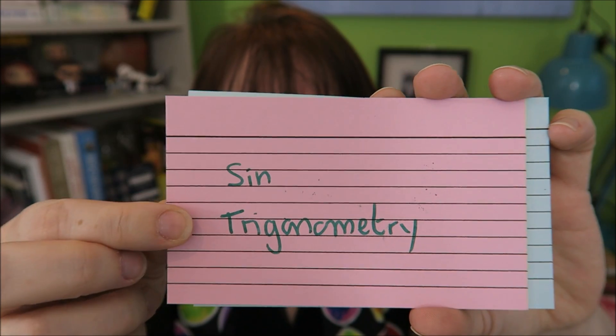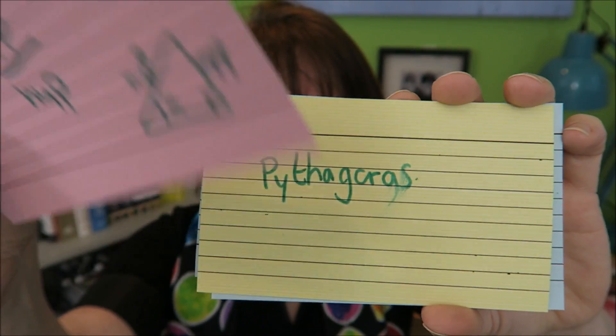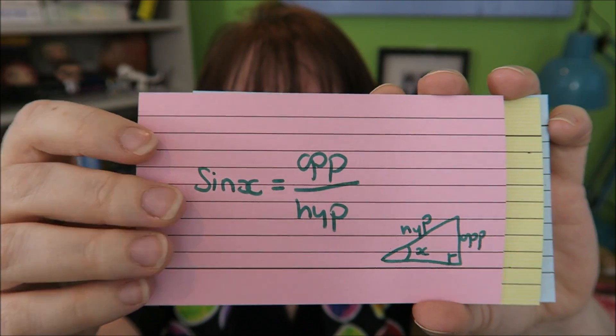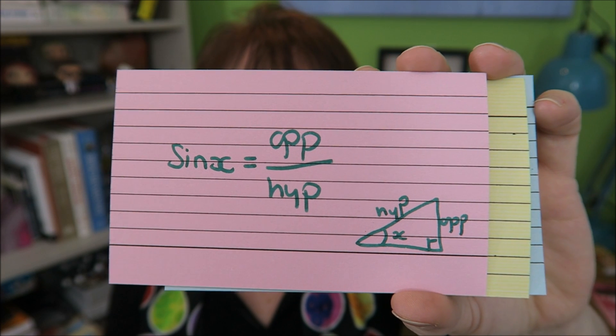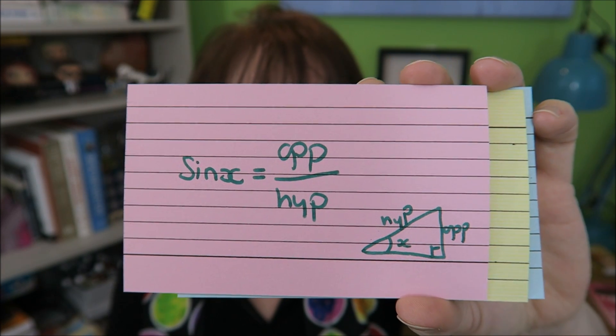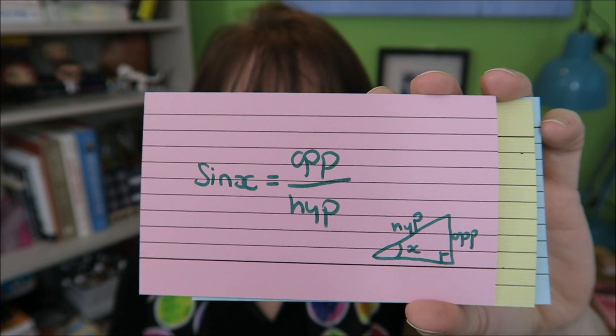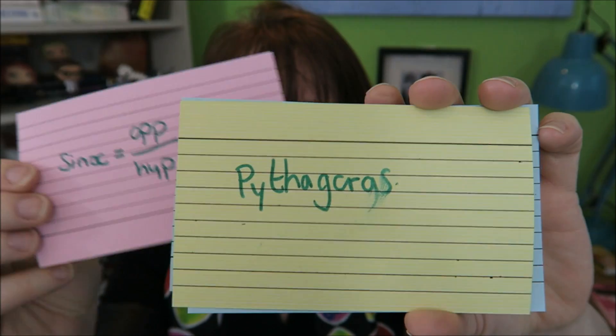The sine rule in trigonometry. Again, we have a right-angled triangle and it is: sine of X equals the opposite over the hypotenuse.